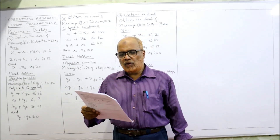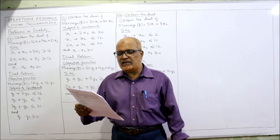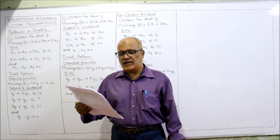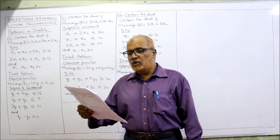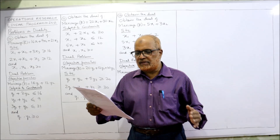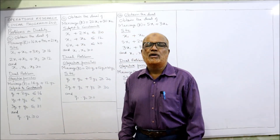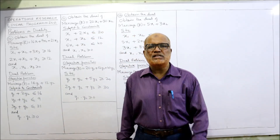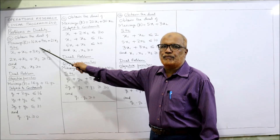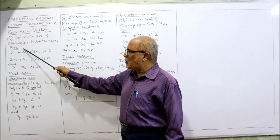Problem 10: Obtain the dual of — Minimize Z = 16X1 + 9X2 + 21X3, subject to: X1 + X2 + 3X3 ≥ 16, and 2X1 + X2 + X3 ≥ 12, with X1, X2, X3 ≥ 0. This is the primal problem, and we have to convert it into the dual problem.